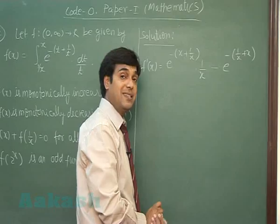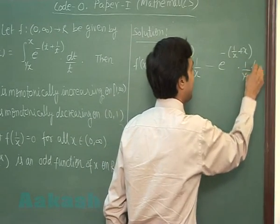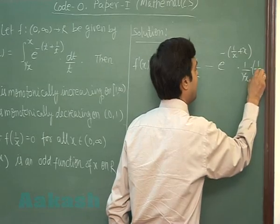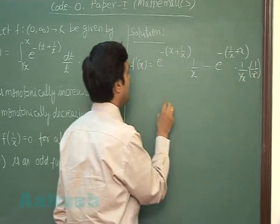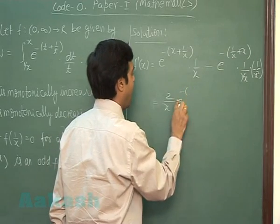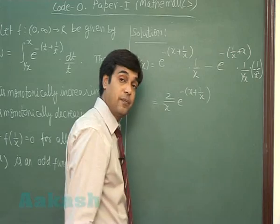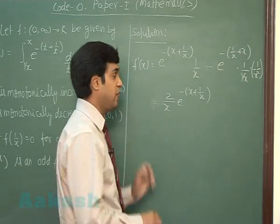which is (2/x) e^(-(x + 1/x)). Since x is 0 to infinity, so it is always greater than 0.